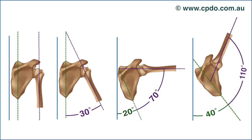This ratio continues above 90 degrees, so that by the time the arm has been raised to 150 degrees, the contributions of each joint would be 110 for the glenohumeral and 40 for the scapulothoracic. The actual ratio can vary during different portions of the arc of elevation and can be different from individual to individual. Therefore, it's always important to compare the involved side with the uninvolved.